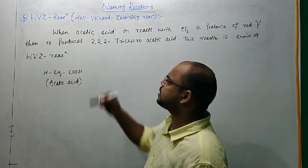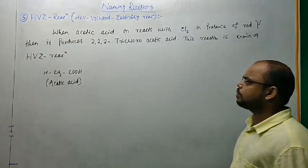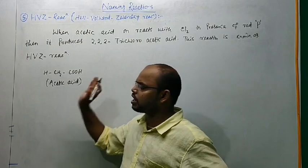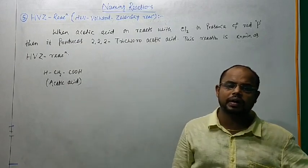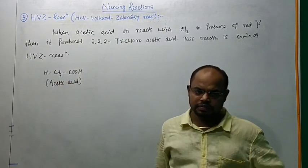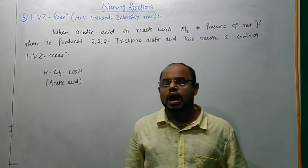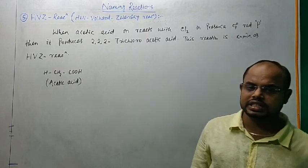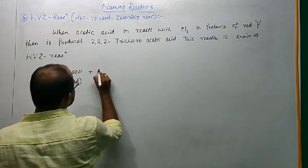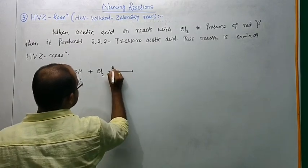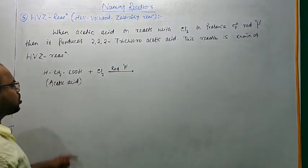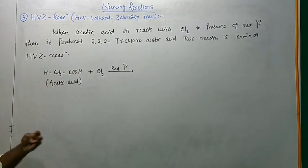Now the next reaction is HVZ reaction or Hell-Volhard-Zelinsky reaction. When acidic acid with alpha hydrogen reacts in presence of red phosphorus, then the alpha hydrogen is replaced by chlorine. This reaction is known as HVZ reaction or Hell-Volhard-Zelinsky reaction.